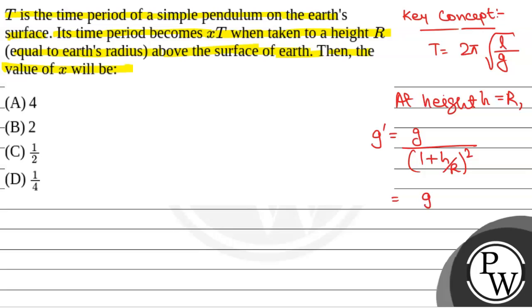If H equals R, this becomes G/(1+1)², that is G/2², which is G/4.